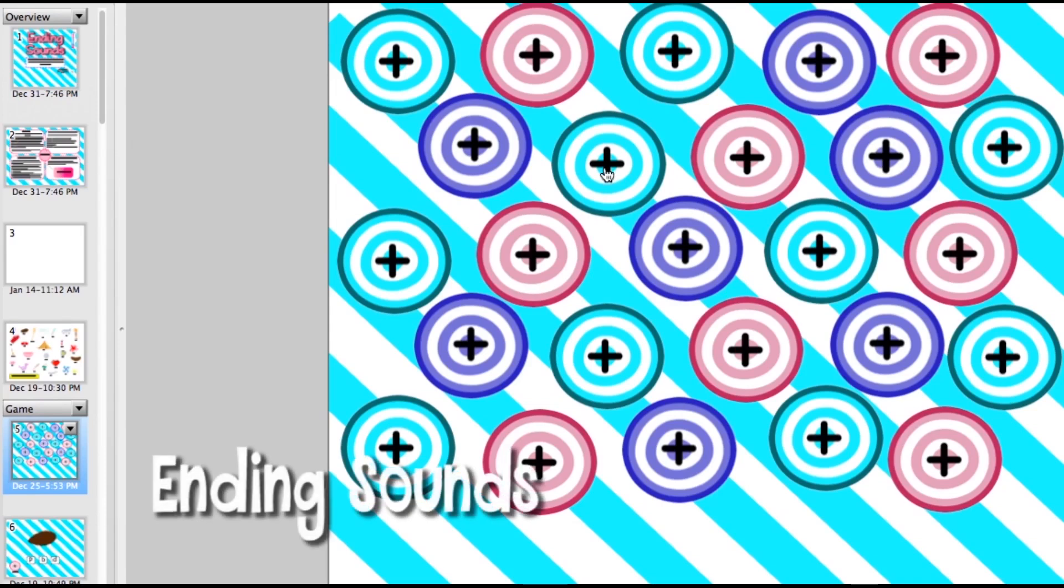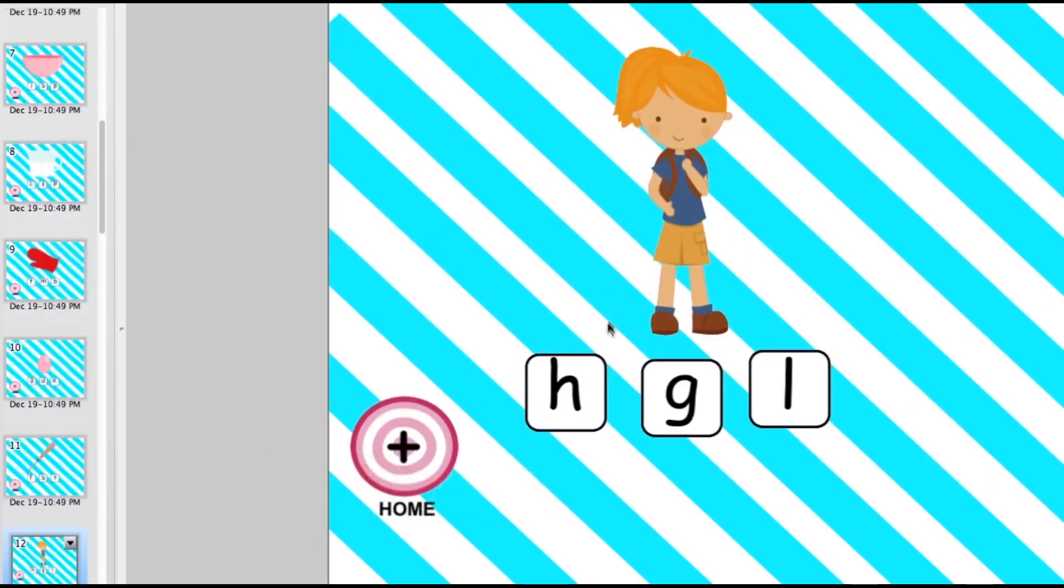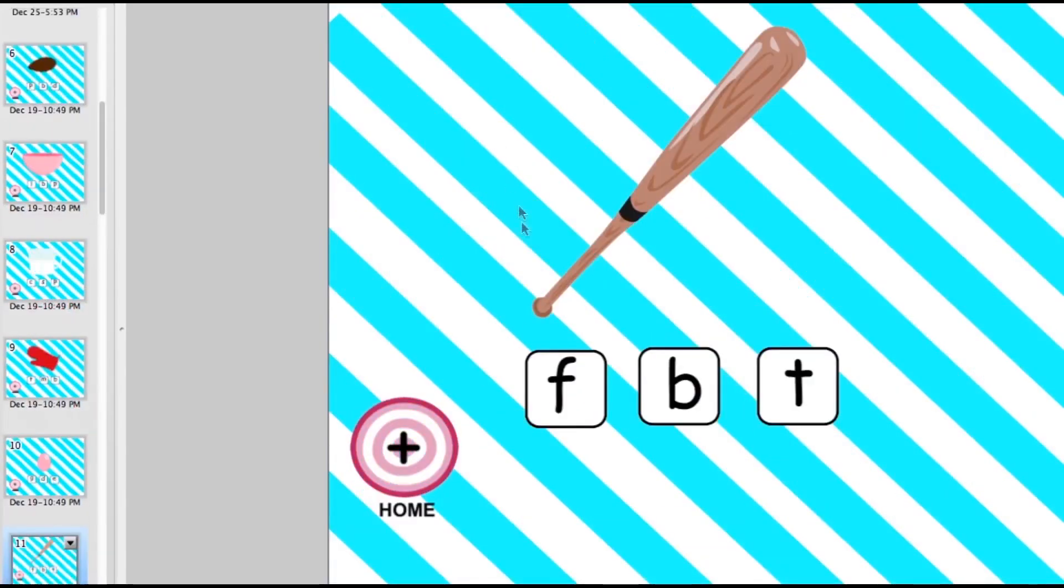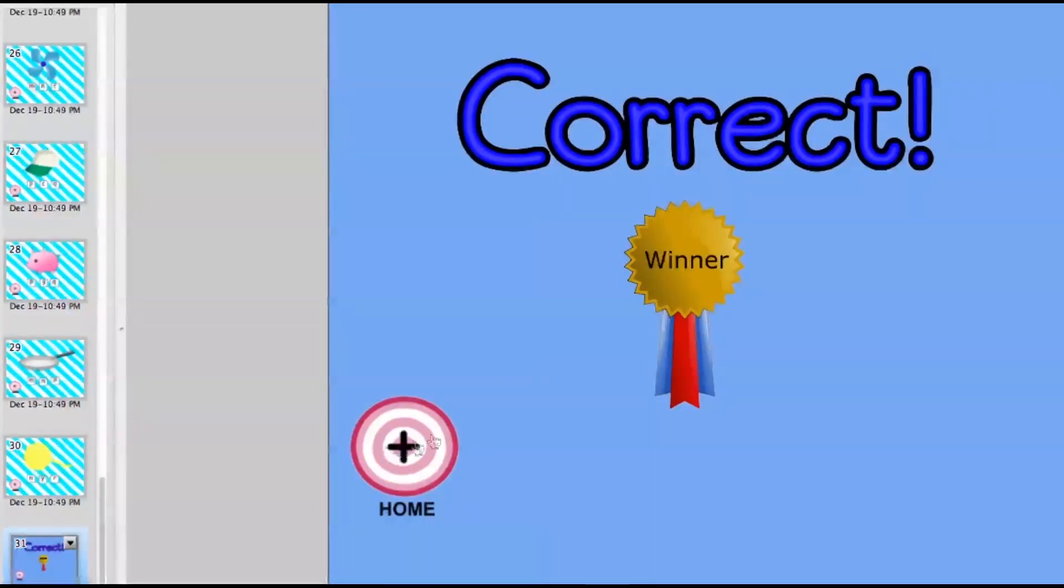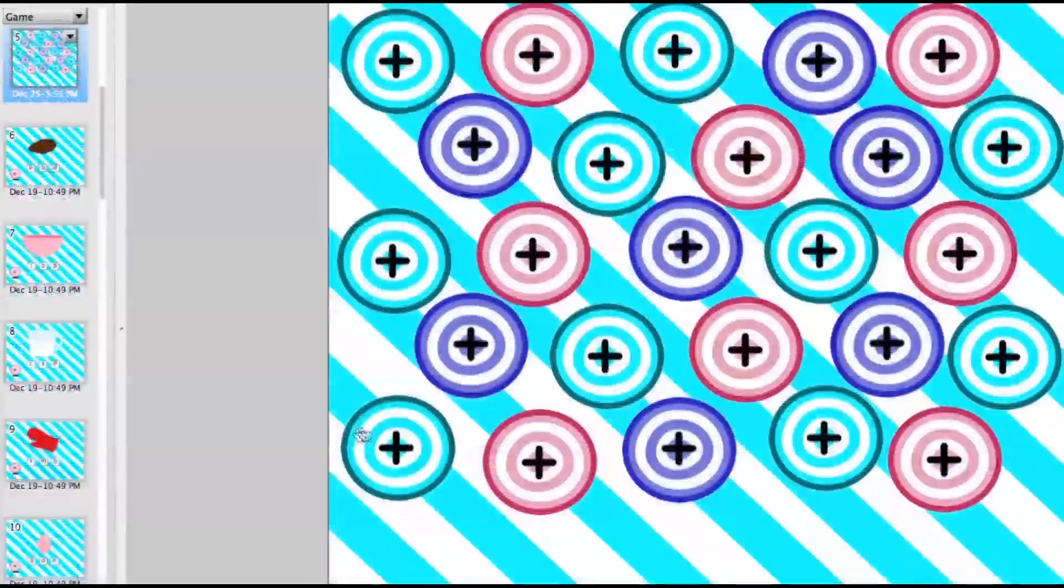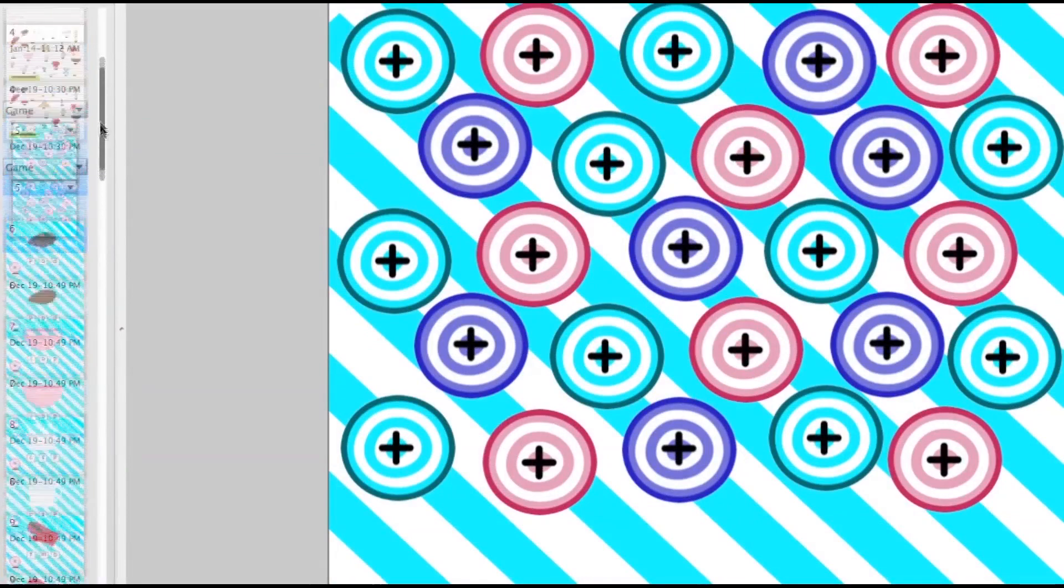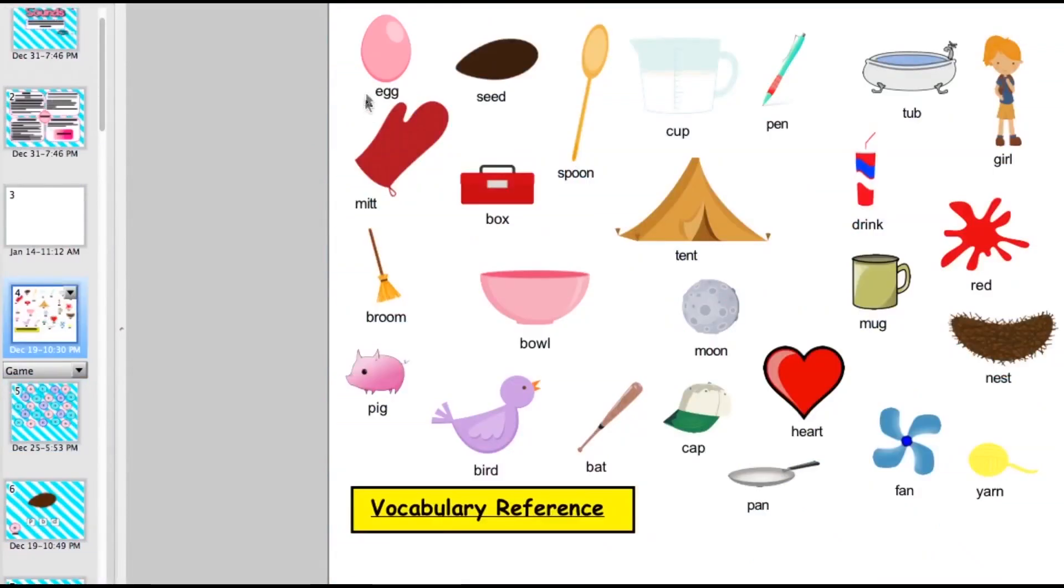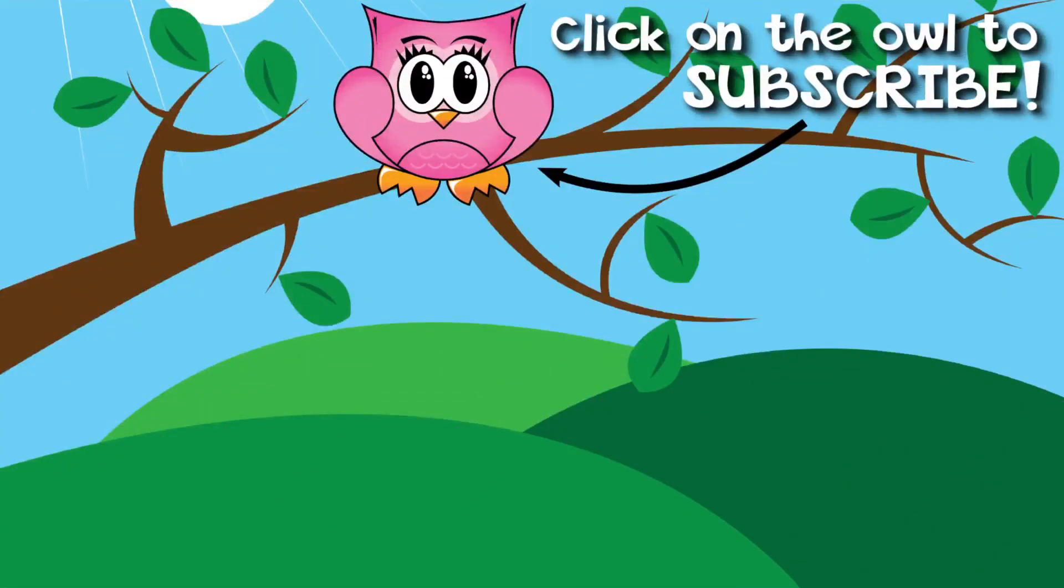And the last game is on ending sounds. Students touch the bullseye and they pick the letter that is the correct ending sound of the image. If they're correct it's going to say correct. If they're not correct it will say oops. This also has a vocabulary page to make sure the students understand what the words are.